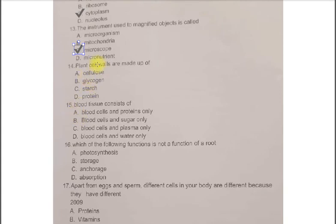Next question. Plant cell walls are made up of A. Cellulose. B. Glycogen. C. Starch. D. Protein. The correct answer is A. Cellulose. Next question.